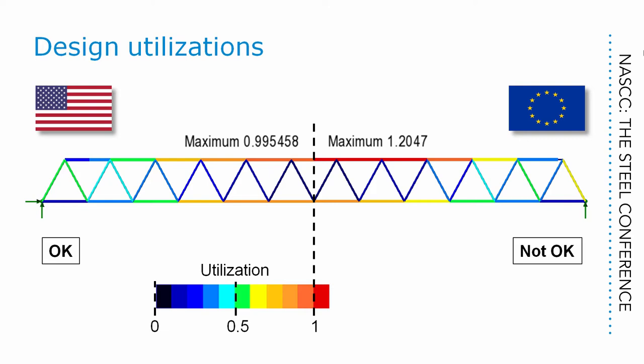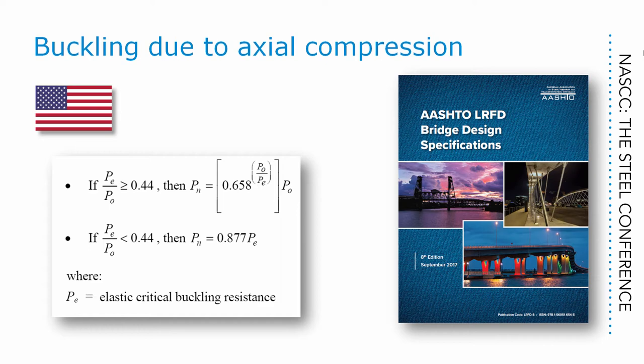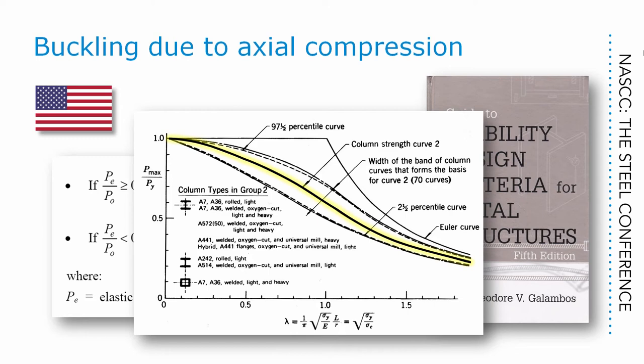The governing check for these members is axial compression buckling with flexure, although there is very little flexure in the top chord. So the underlying difference is due to buckling in axial compression. In AASHTO article 6.9.4.1.1, non-slender members have a nominal compressive resistance PN, which is determined from the yielding resistance PO and the elastic critical buckling resistance PE. That buckling resistance PN is in fact based on the SSRC strength curve 2P, as illustrated in Galambos. The curve used is technically only applicable to certain classes of member, and it assumes an initial out-of-straightness of length divided by 1500.